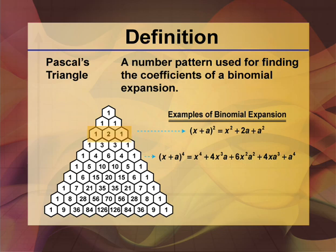For example, row 3 shows 1, 2, 1, and it can be used to find the expansion of a binomial of the form x plus a quantity squared.